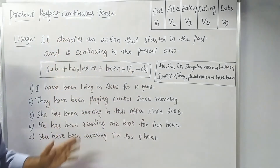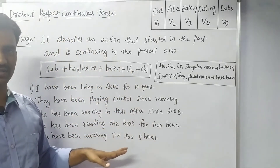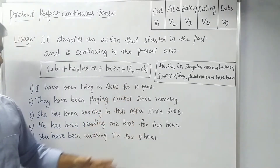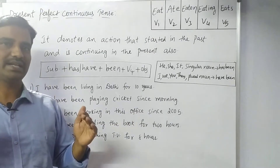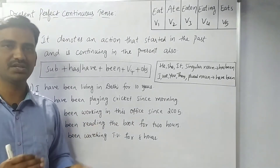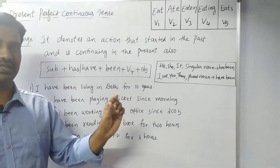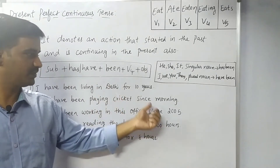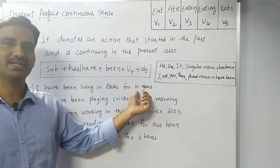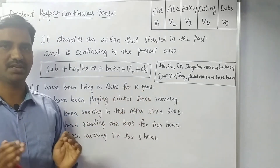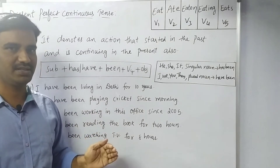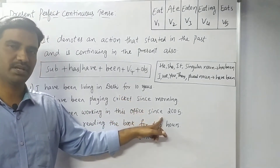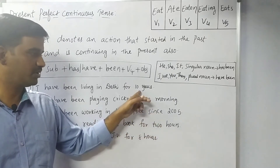'For' is a period of time, and 'since' is a point of time. For example, 'for' uses a duration like 'a year' or '10 years,' while 'since' uses a specific point in time like 'since morning' or 'since 2005.' So: period of time uses 'for,' and point of time uses 'since.'